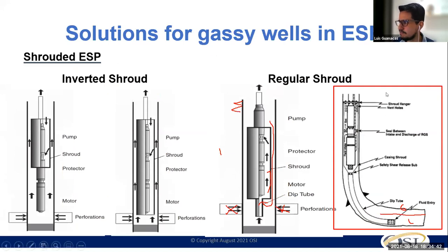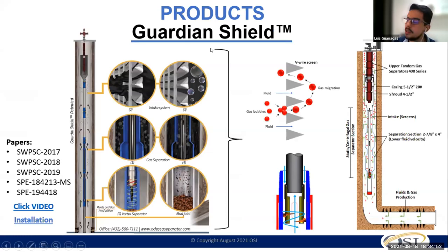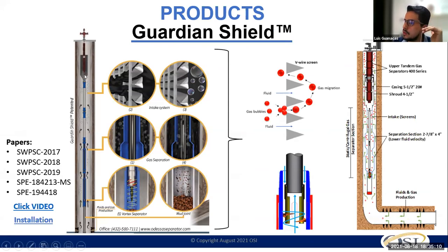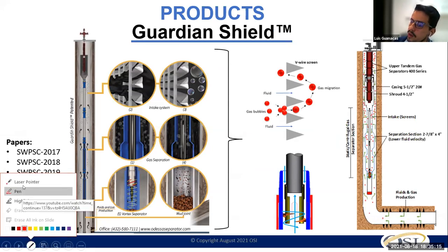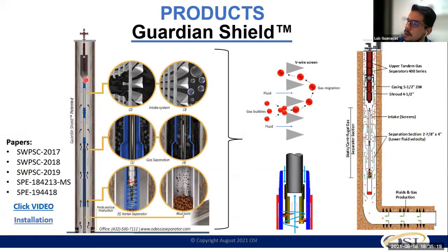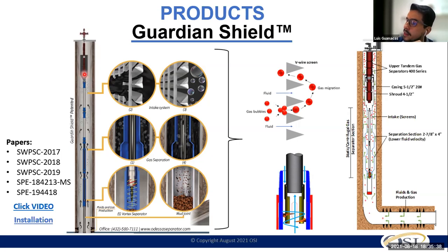Using the concept of a modified gas separator for unconventional wells, we created a tool we call the Guardian Shield. The Guardian Shield is a gas separator connected below an ESP shroud — we recommend encapsulating from the top of the pump intake to the bottom. Something very important we understood is that the space from the sensor to the bottom of the shroud is very critical. This space should be as short as possible — two feet is recommended. If too much space is left, gas starts releasing in that area, causing poor motor cooling.